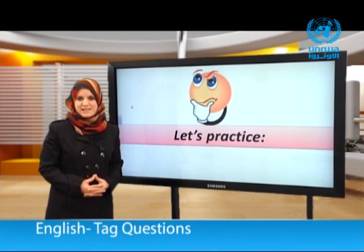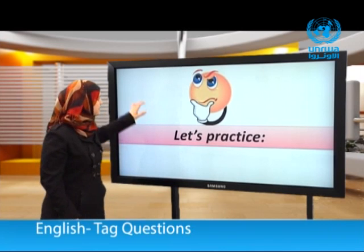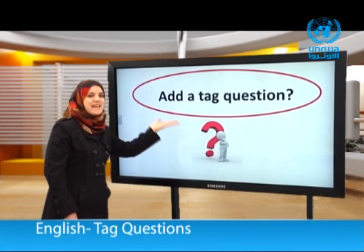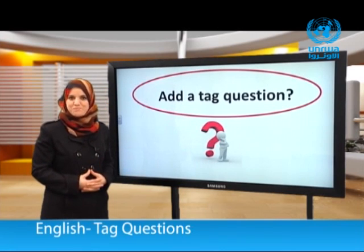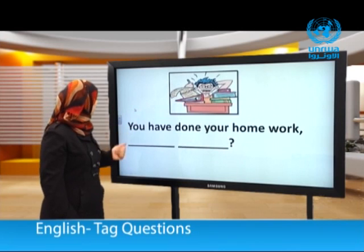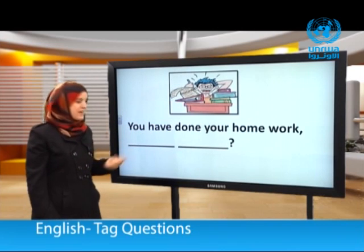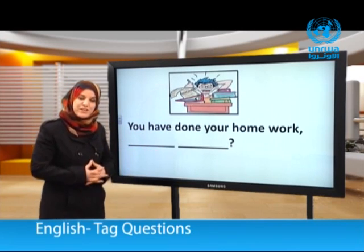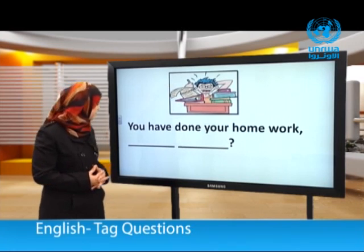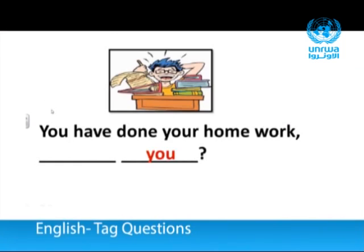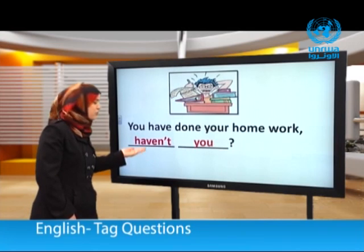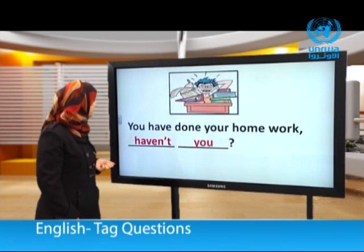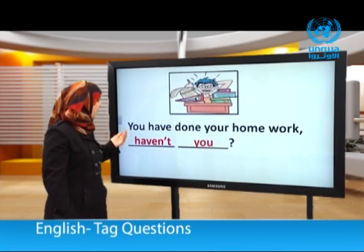Now let's practice. It's time to practice. Let's see our first activity: Add tag questions. You have done your homework. Can you form a tag question? We begin with the subject pronoun 'you', then we need the helping verb — here it is positive, so in the tag question we need it negative. The answer is: You have done your homework, haven't you?